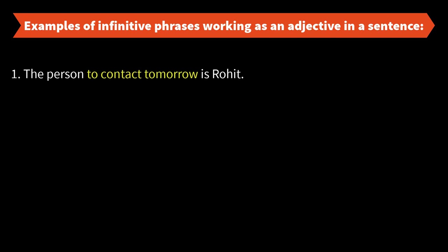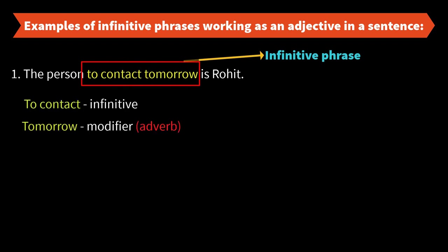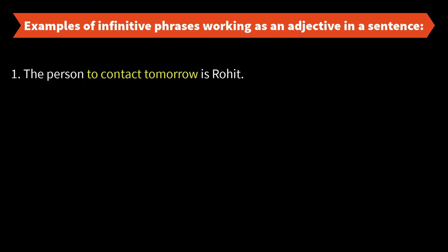Now let us take some examples of infinitive phrases working as an adjective in a sentence. The person to contact tomorrow is Rohit. Here the infinitive phrase 'to contact tomorrow' is giving information about the noun 'person' — it's modifying the noun 'person.' 'To contact' is the infinitive and 'tomorrow' is the modifier. Which person? The person to contact tomorrow is Rohit.